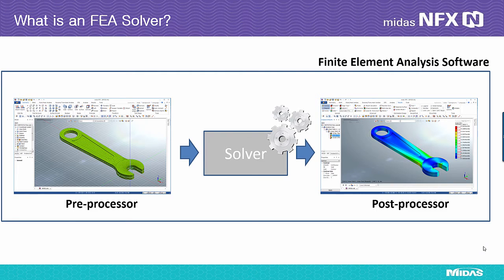Every FEA software is composed of three parts: the pre, the post, and the solver. As the pre and the post can be found through the user interface, we understand generally easily what they represent, but the solver remains a bit mysterious, hidden behind the interface to solve all the problems.